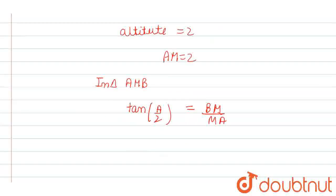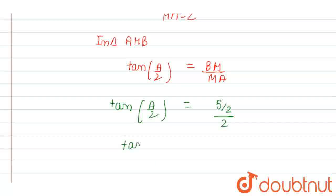From here, we get tan(A/2) = BM/MA = (5/2)/2 = 5/4.